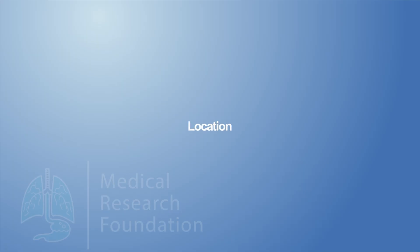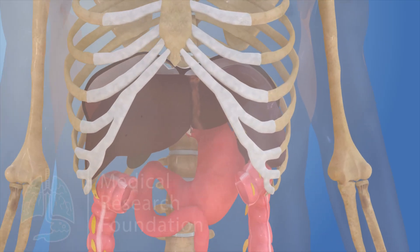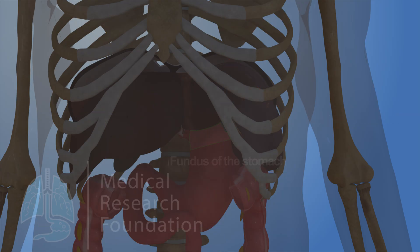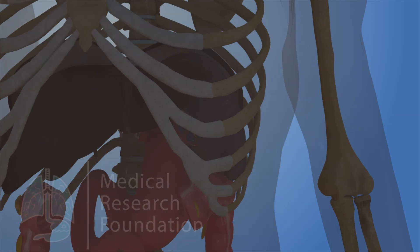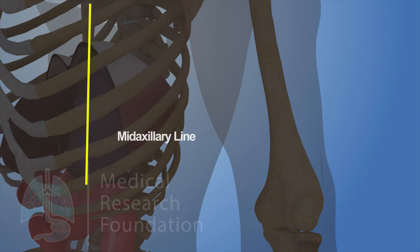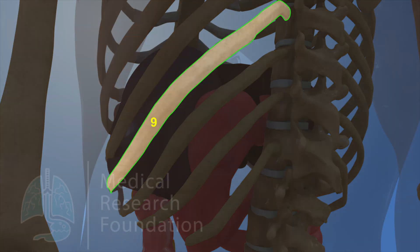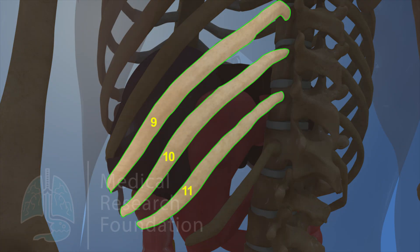The spleen is located in the left hypochondrium, between the fundus of the stomach and the diaphragm, behind the mid-axillary line, opposite the 9th, 10th, and 11th ribs.